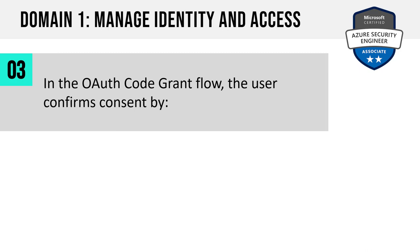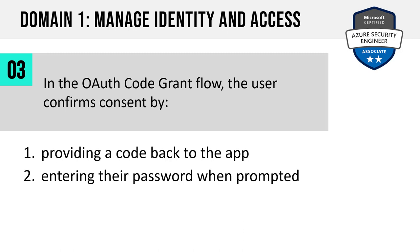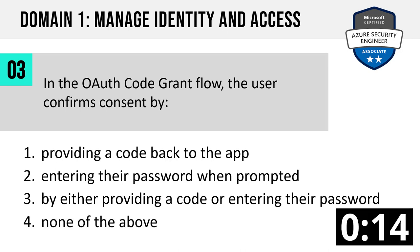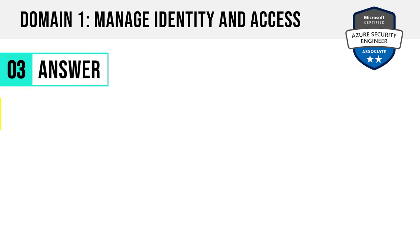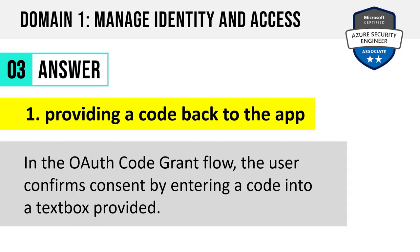Question 3. In the OAuth code grant flow, the user confirms consent by: providing a code back to the app; entering their password when prompted; by either providing a code or entering their password; or none of the above. The answer is option one: by providing a code back to the app. In the OAuth code grant flow, the user confirms consent by entering a code into a text box provided.